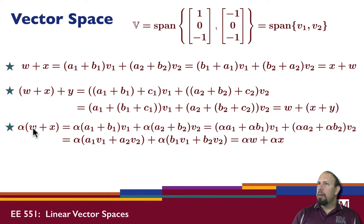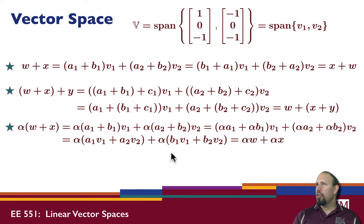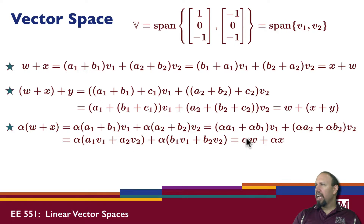For scalar distribution: alpha times (W plus X). I distribute alpha through W plus X, collect the terms in V1 and the terms in V2, and rewrite using the distribution property. This gives alpha·W plus alpha·X, showing the distributive property holds. You break it down into pieces and work with the pieces.